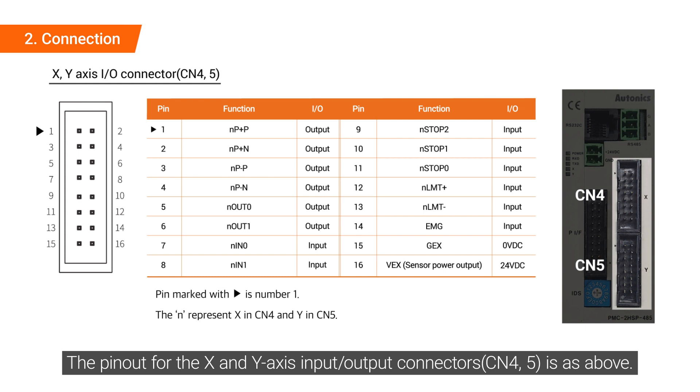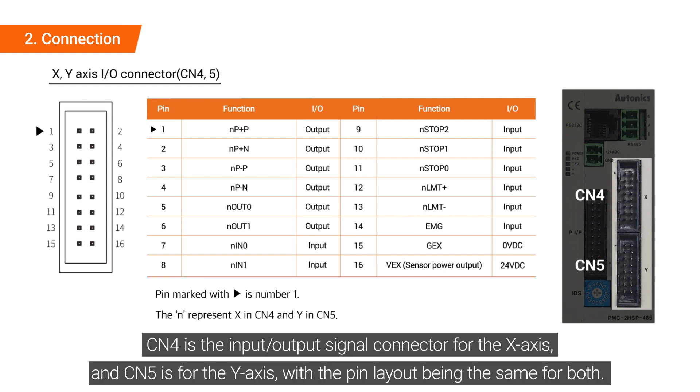The pinout for the X and Y axis input output connectors is as above. CN4 is the input output signal connector for the X axis and CN5 is for the Y axis, with the pin layout being the same for both.